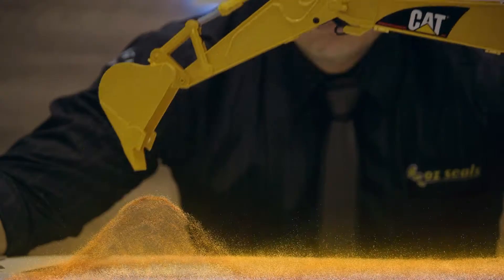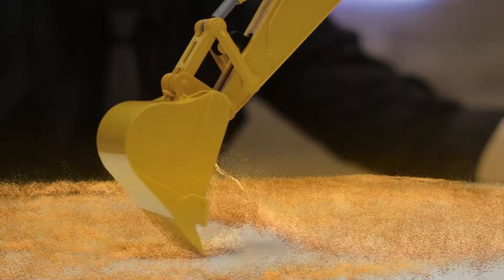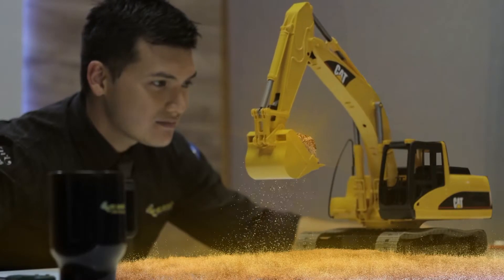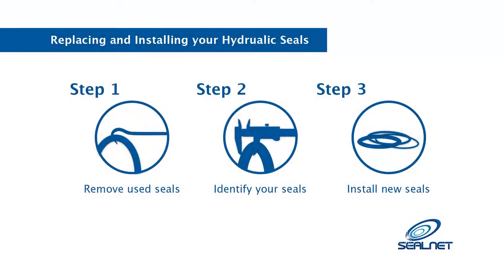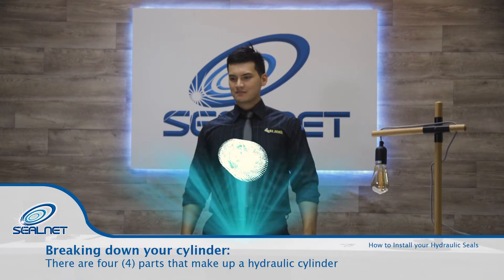Replacing the seals on your hydraulic equipment can seem like a difficult thing. But at SealNet, we are here to make things simple and easy. There are three simple steps in replacing your hydraulic seals: remove your used seals, identify your seals, and install your new seals.